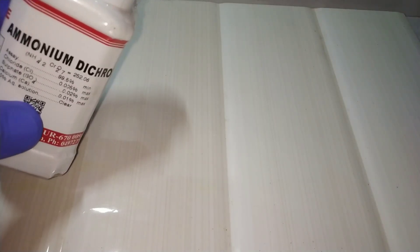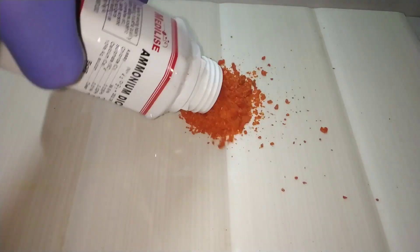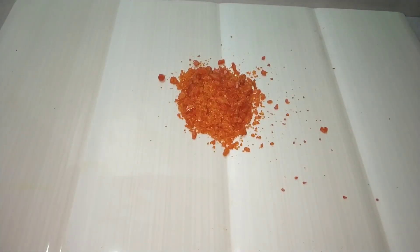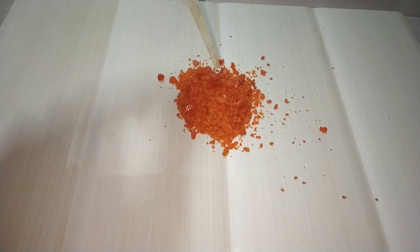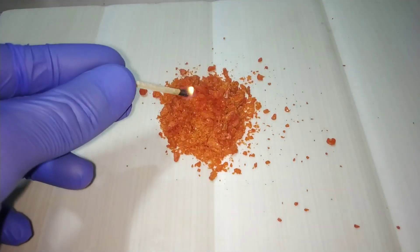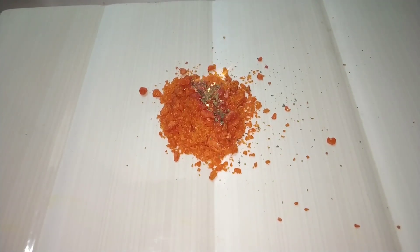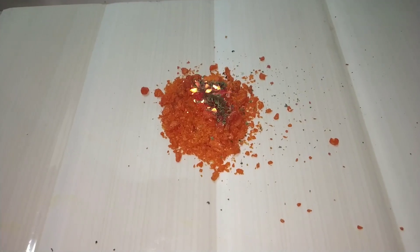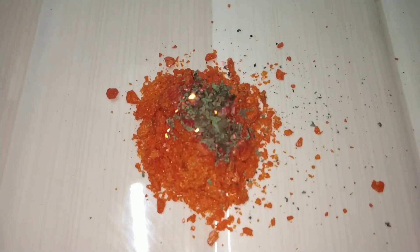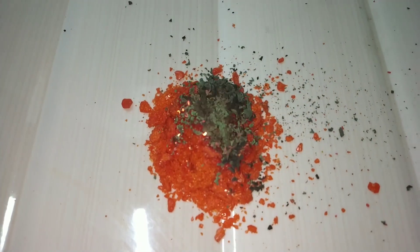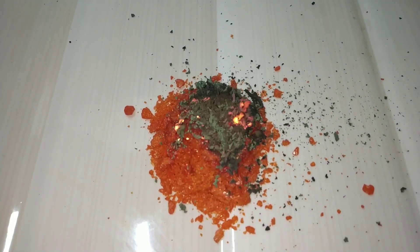Now let us see the thermal decomposition of ammonium dichromate. Here I have heaped up some ammonium dichromate crystals on this piece of tile and I am adding some ethanol over it so that it can burn easily. Now let us burn the ammonium dichromate. The reaction starts off by giving orange colored sparks and throws green colored chromium 3 oxide into air. This produces a miniature volcano like effect.